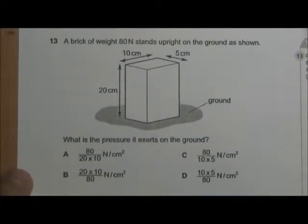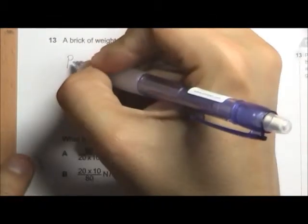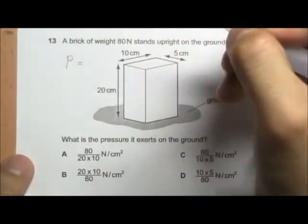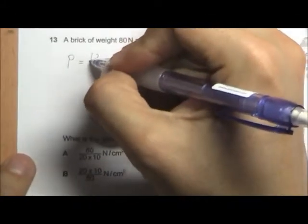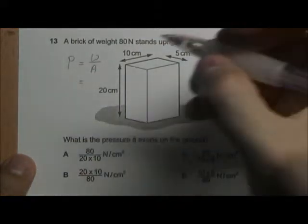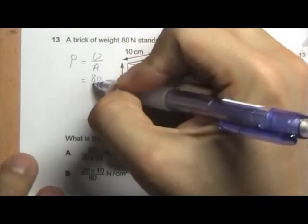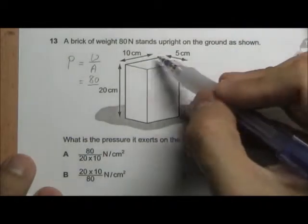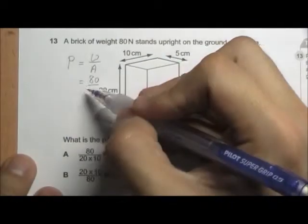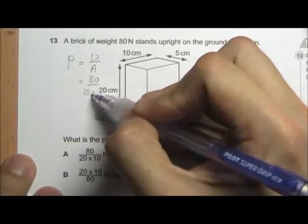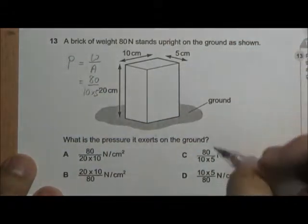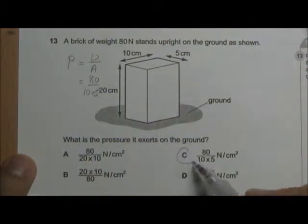We have a standing brick and we are asked to calculate the pressure that it exerts on the ground. We can use the formula pressure equals force over area. And the force in this case will be the weight. So it's weight over area. The weight is 80 Newton and the area in contact is 10 cm by 5 cm. So it will be divided by 10 times 5. And the answer is option C.